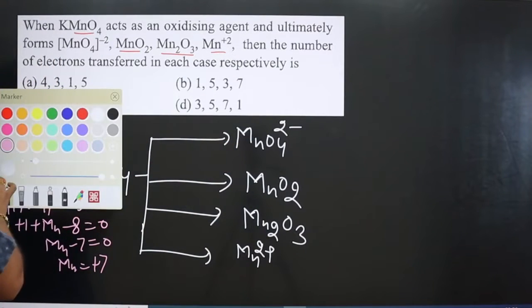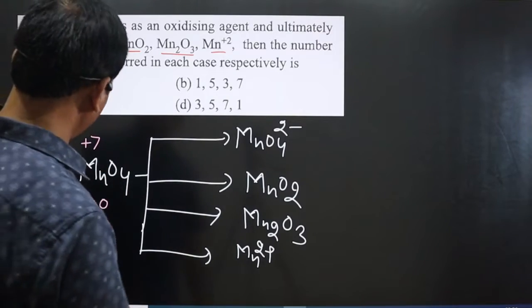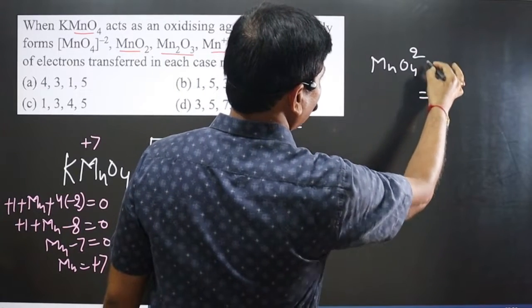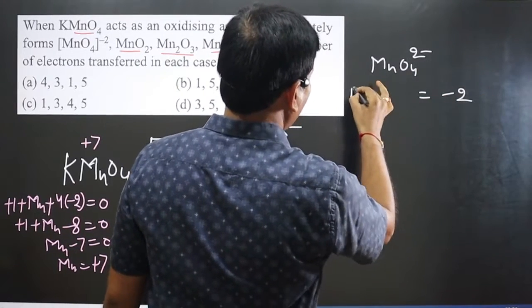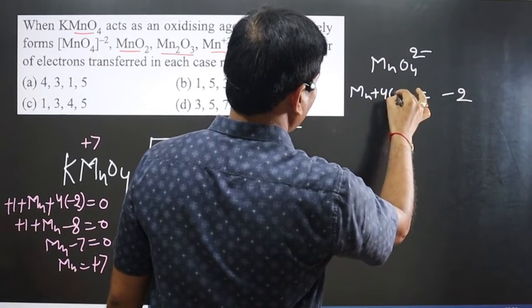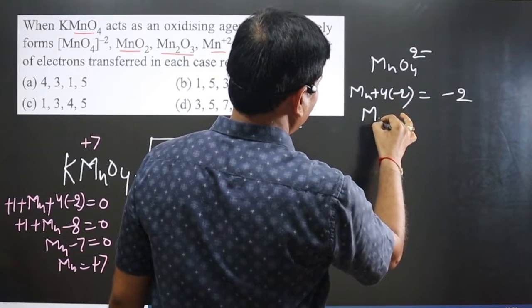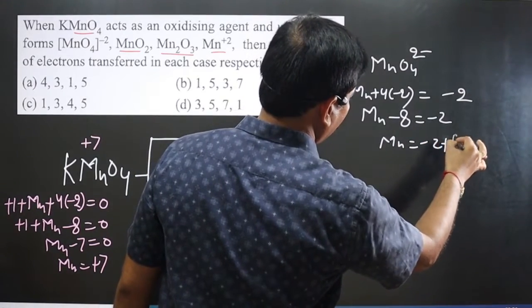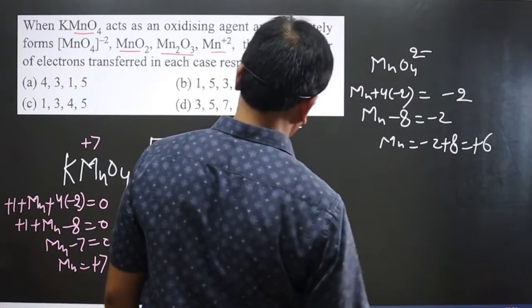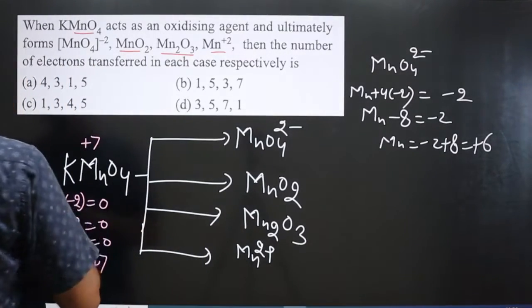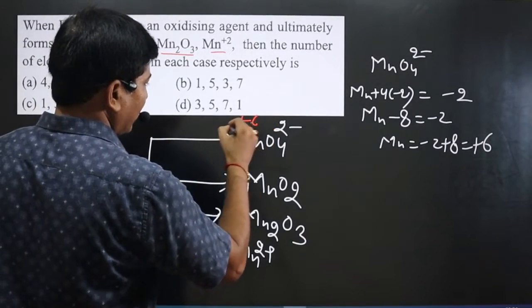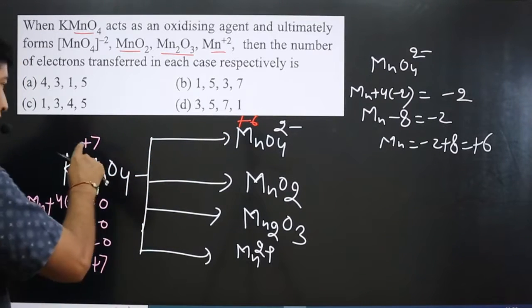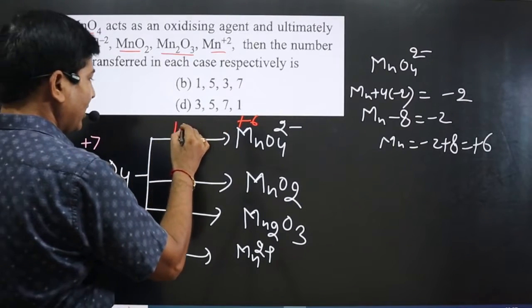MnO4^2- is there. In this case we can calculate Mn oxidation number. Overall charge is -2. Then we have Mn + 4 oxygen, each oxygen is -2. Then Mn - 8 = -2, then Mn will be -2 + 8 = +6. So in this case we get Mn is present in +6 oxidation number. Now you can find the difference in oxidation numbers: 7 - 6 = 1 electron transferred.